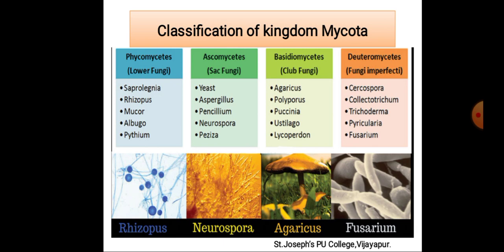Here you can also see the examples belonging to these important classifications. Phicomycetes involves Rhizopus, Mucor, Albugo, as well as Saprolegnia and Phytium.